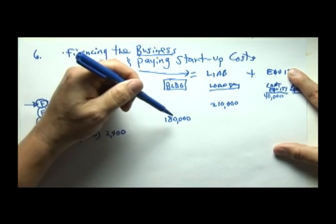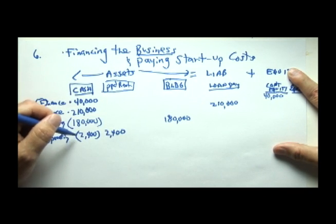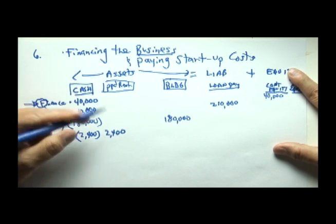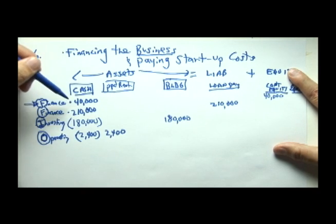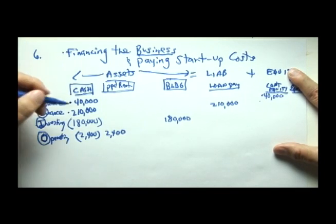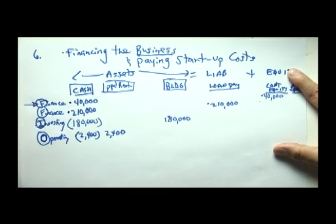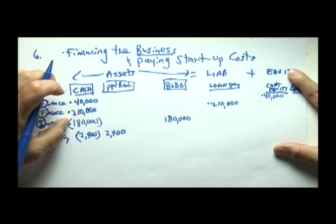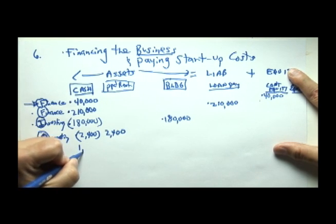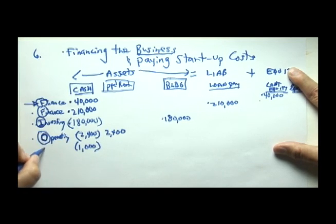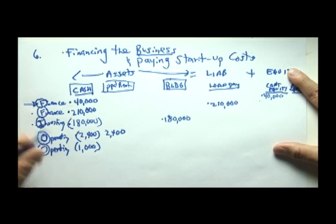Startup costs can be investments in long-term assets, or short-term purchases used up in less than a year. A short-term use of cash used up in a year or less is classified as an operating activity. The business received initial cash from the owner's investment, secured additional financing from the bank, invested $180,000 in a building, and then paid prepaid rent. Now let's assume it also spends $1,000 on a local radio or TV advertisement — this too is an operating outflow because it will be used up in the short run.